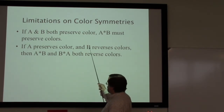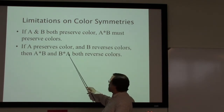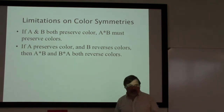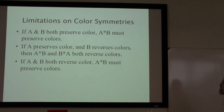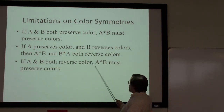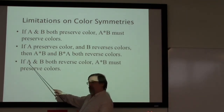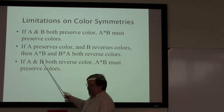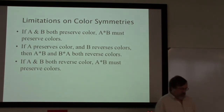The other order would still have to reverse colors: if B took greens to blues it would also take blue to green, so A would keep it green — the combination takes blue to green and reverses colors. And if A and B both reverse colors, their combination would have to preserve colors: A takes green to blue and then B takes it right back to green, so the combination takes green to green and blue to blue.